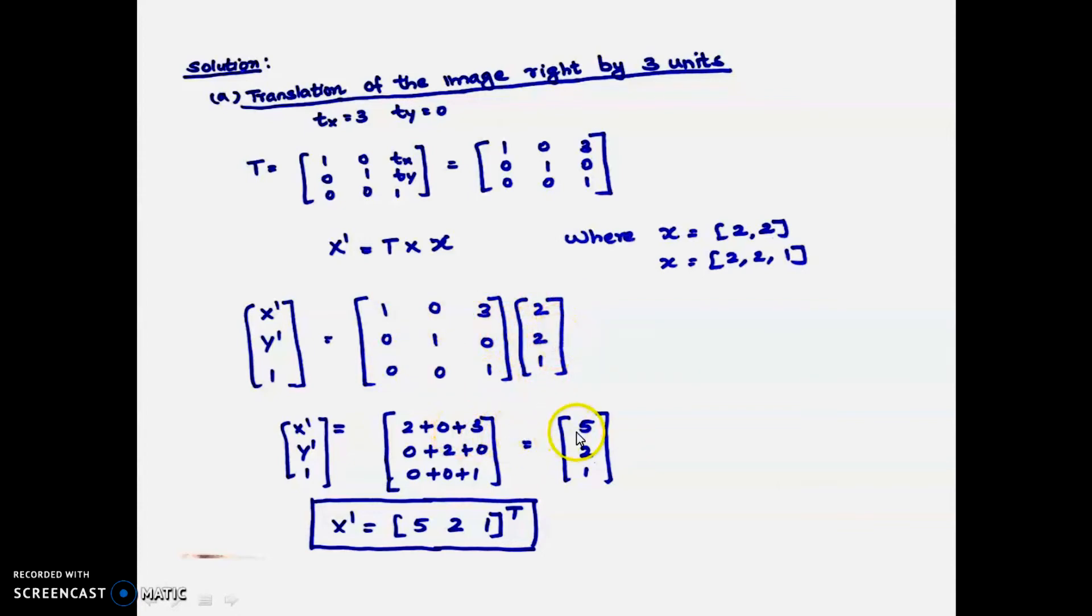General matrix multiplication: 2 + 0 + 3 = 5, next is 0 + 2 + 0 = 2, and 0 + 0 + 1 = 1. So x' = [5, 2, 1]^T. Because it's a vertical matrix, if we write horizontally we put transpose. We can write x' = (5, 2).